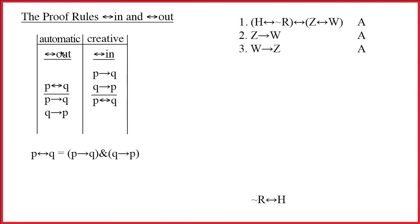Double arrow out's an automatic rule, just like ampersand out. If you see a double arrow, you break it up into two single arrows, thinking about this equivalence. Of course, if you want to build a double arrow, you have to have the two single arrows on two separate lines.